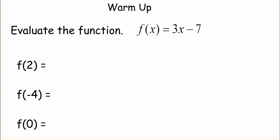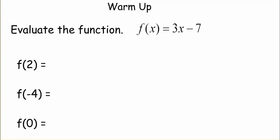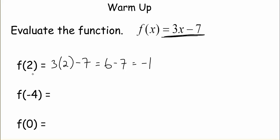This is lesson 30, step functions. Our warm-up is to evaluate the value of our function at 2, at negative 4, and at 0. We're going to substitute in our input values into the equation. So 3 times 2 is 6, and 6 minus 7 is negative 1. So the value of our function at 2 is negative 1. When we input a 2, we get out a negative 1.